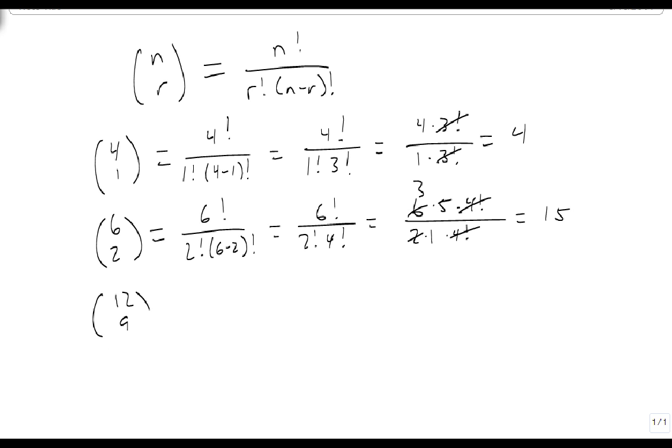Finally, what about 12 choose 9? I'm going to jump right to it: this becomes 9 factorial times 3 factorial, which is 12 times 11 times 10 times 9 factorial over 9 factorial times 3 times 2 times 1. The 9 factorials go away. The 3 goes into the 12 and leaves a 4, and the 2 goes into the 4 and leaves a 2. So I get 22 times 10, which is 220.